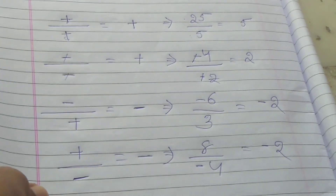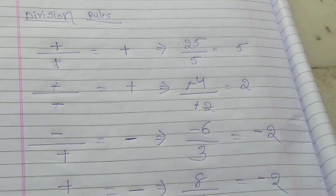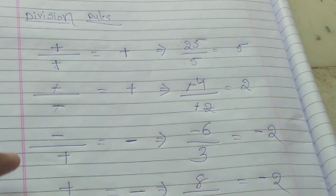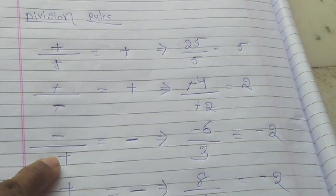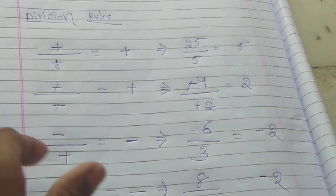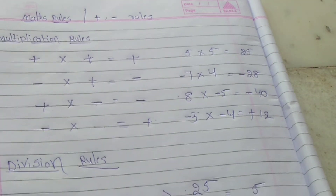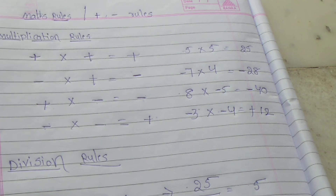So, to remember division and multiplication rules: when the symbols are the same, the answer is plus; when the symbols are different — one plus and one minus — the answer is minus. These division and multiplication plus/minus rules are easy to remember.